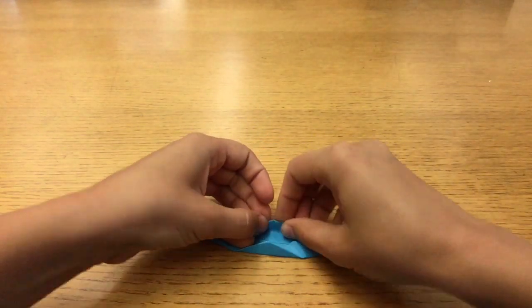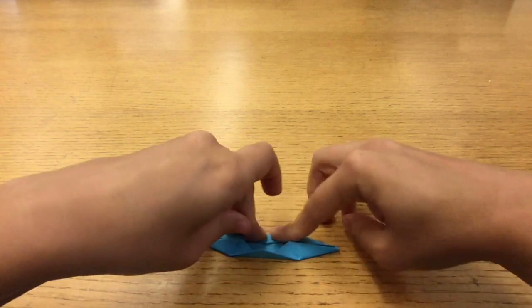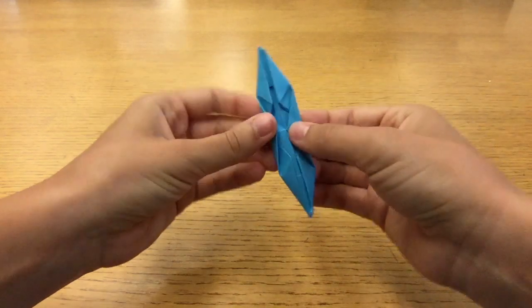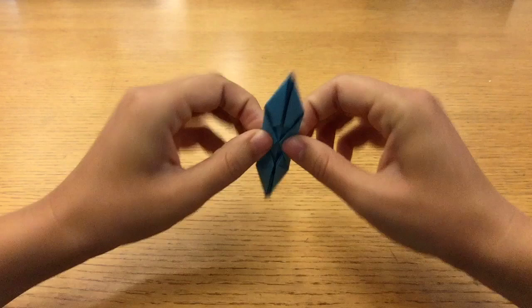These folds are very thick, but just press them down. There's no need to crease them. This is the shape you'll have when that's finished. Does it look like a boat yet? Now it's time for the fun part.